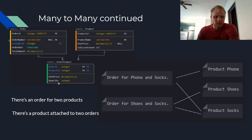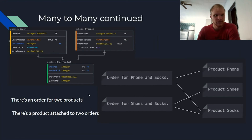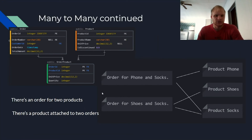You also get the unit price and the quantity on the order-product table — so you get the price of the socks plus the order, and also the quantity of product that you want. So there's an order for two products and a product attached to two orders — that's how we know it's many-to-many. That was just a quick video explaining database table relationships. I hope you enjoyed. If you did, give it a like and subscribe and I'll see you next time.